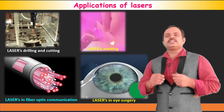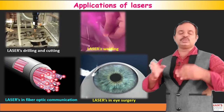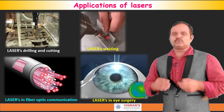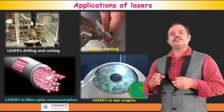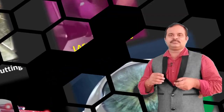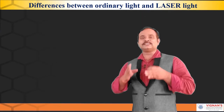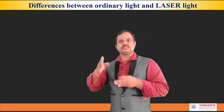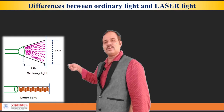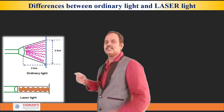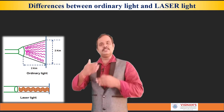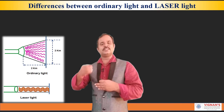Now, the question is why only lasers are being used in these applications. Why not a normal light can be used? To understand this, let us try to find out what are the differences between a laser light and a normal light. After this, you will be able to understand why lasers are so special to use in different applications. In this picture, you can see this is a normal, ordinary touch light and this one is a laser light.